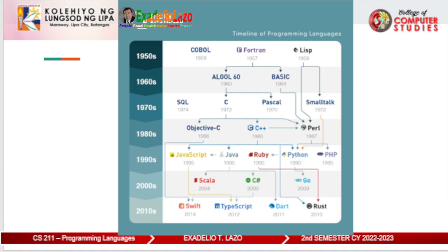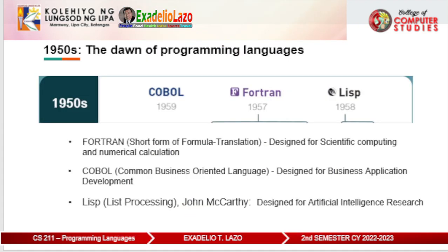It is difficult to create such an infographic because programming languages are not isolated — programming languages influence other languages, which in turn influence others. So let's start our journey. The 1950s: the dawn of programming languages. Before this decade, people programmed in machine code.